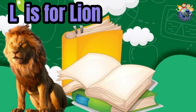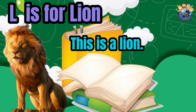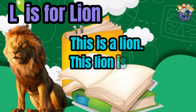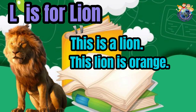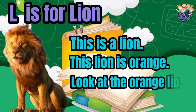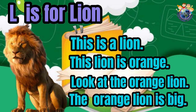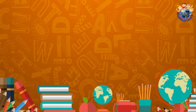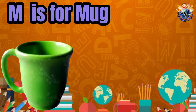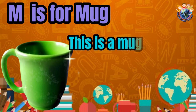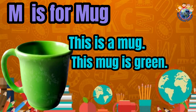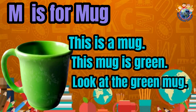L is for lion. This is a lion. This lion is orange. Look at the orange lion. The orange lion is big. M is for mug. This is a mug. This mug is green. Look at the green mug.